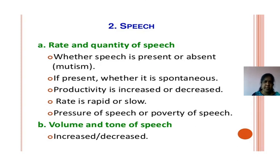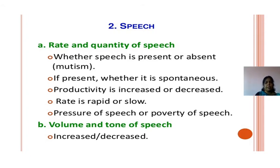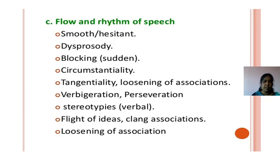Speech: rate and quality of speech — whether speech is present or absent (mutism), spontaneous productivity of speech — increased or decreased, rate — rapid or slow, pressure of speech, poverty of speech, volume and tone — increased or decreased, flow and rhythm — smooth, blocking, circumstantiality, tangentiality, loosening of association, stereotypy, flight of ideas, and clang association.